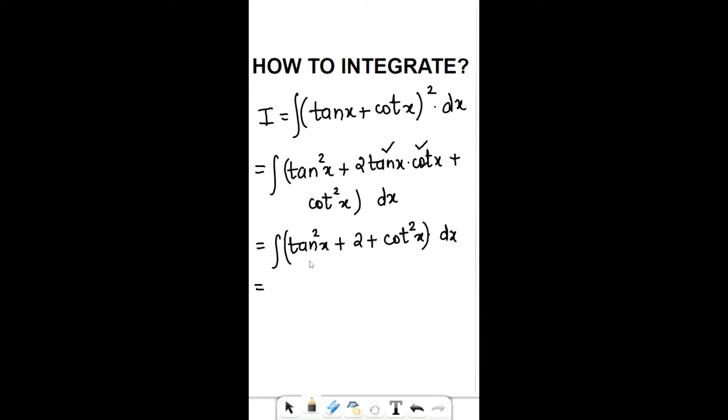We can apply the trigonometric formula for tan²x and cot²x. The value for tan²x can be written as sec²x - 1, then plus 2, and the value for cot²x can be written as cosec²x - 1. If you can see, this -1 and -1 makes -2, and -2 and +2 gets cancelled.